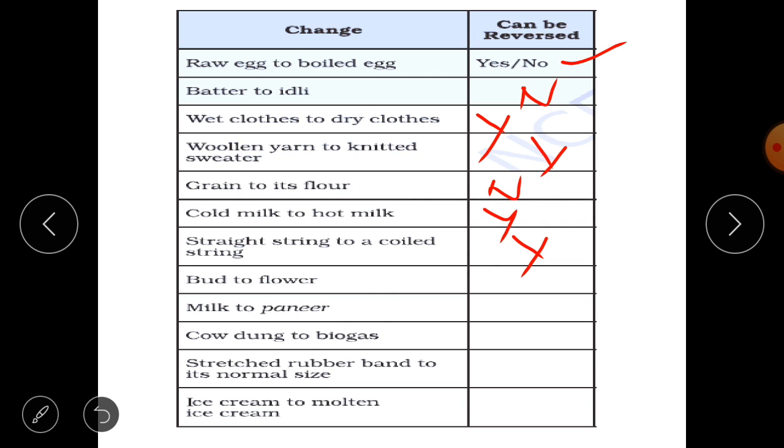Now bud to flower. No that's not a reversible change. The flower cannot turn into bud again. Milk to paneer. We have discussed a lot. Again no.